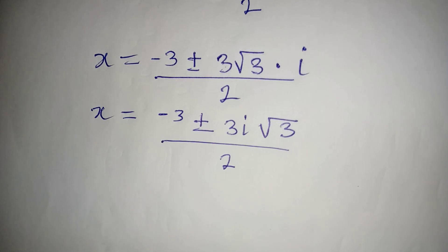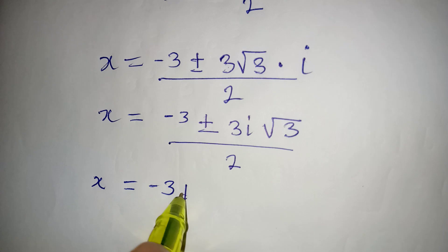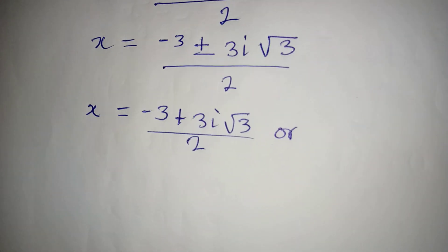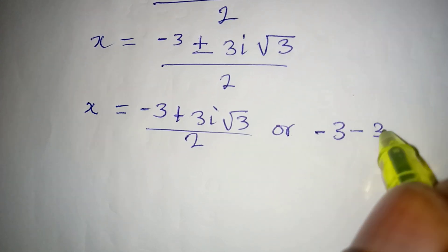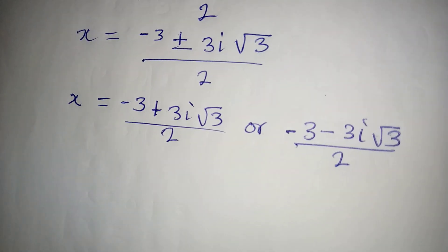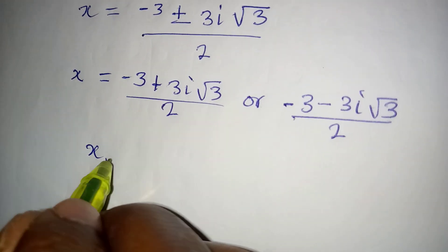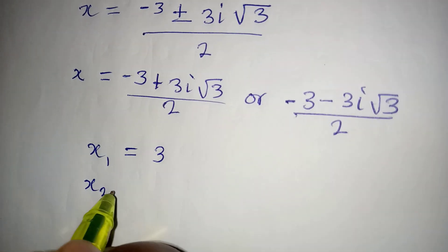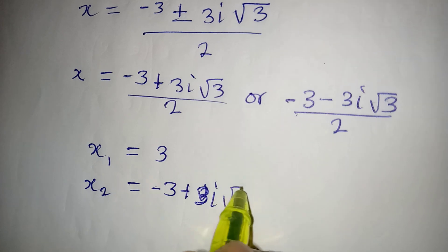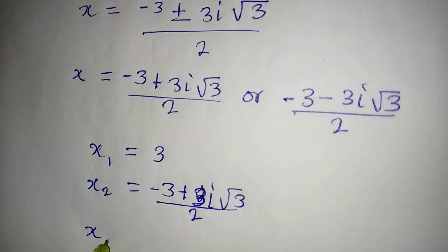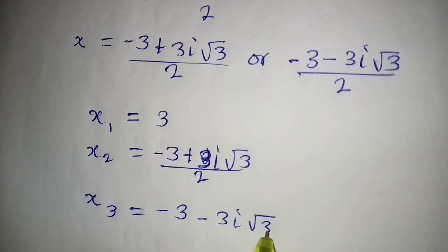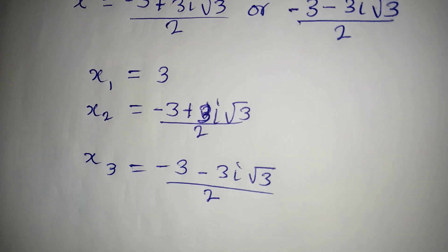We have a two-in-one solution: x equals negative 3 plus 3i root 3 over 2, or x equals negative 3 minus 3i root 3 over 2. These are the two other solutions. Bringing all solutions together: x₁ equals 3, x₂ equals (negative 3 plus 3i√3) over 2, and x₃ equals (negative 3 minus 3i√3) over 2. These are the three solutions to the equation.